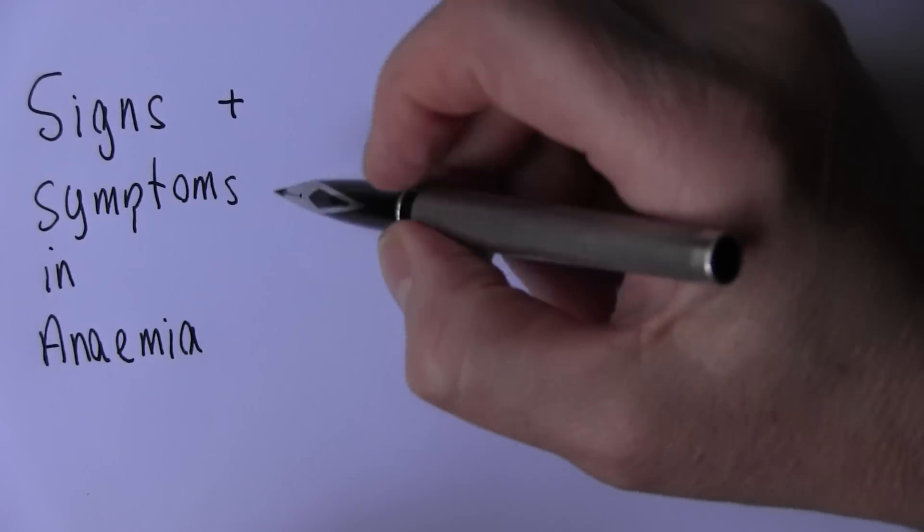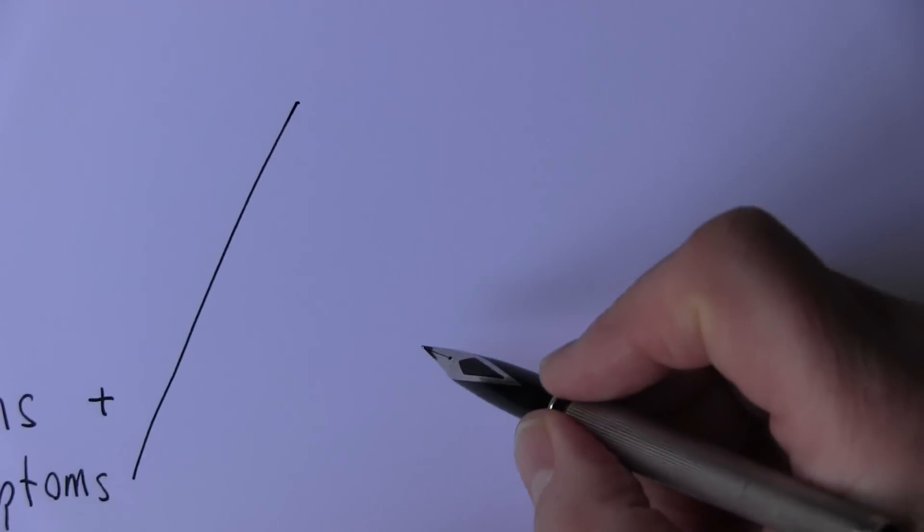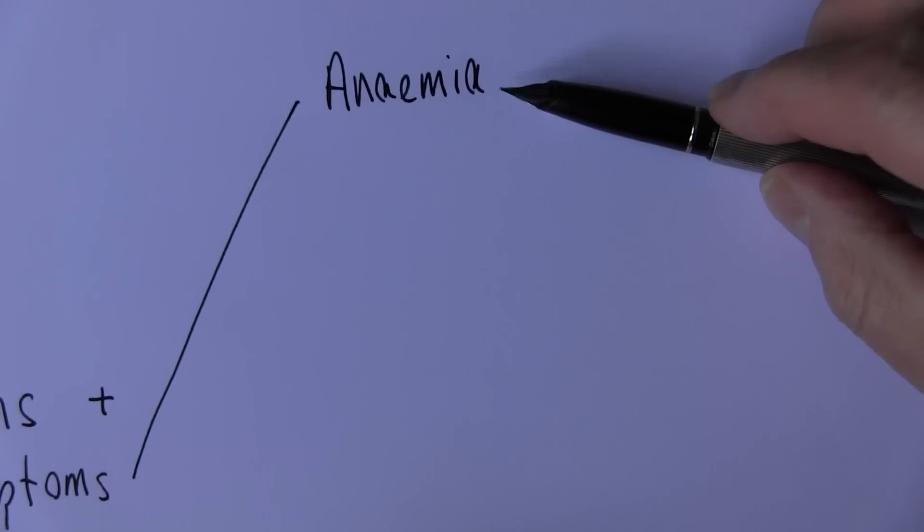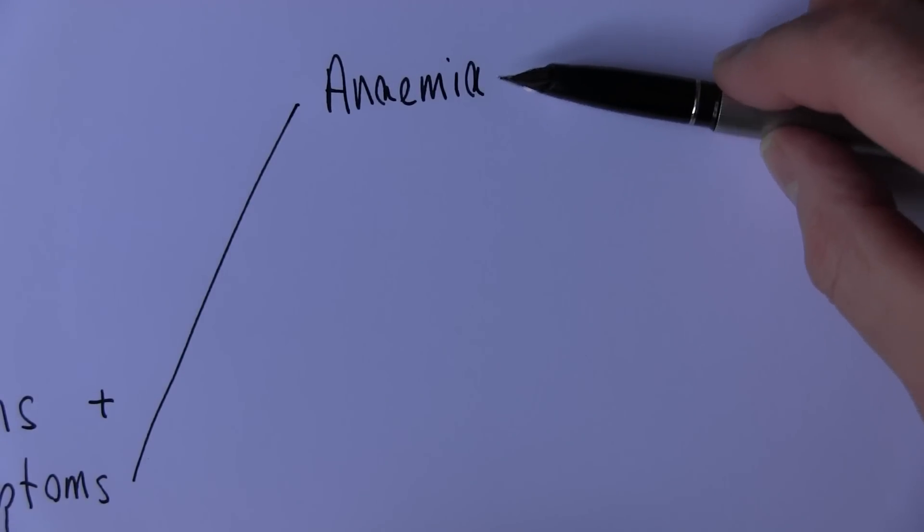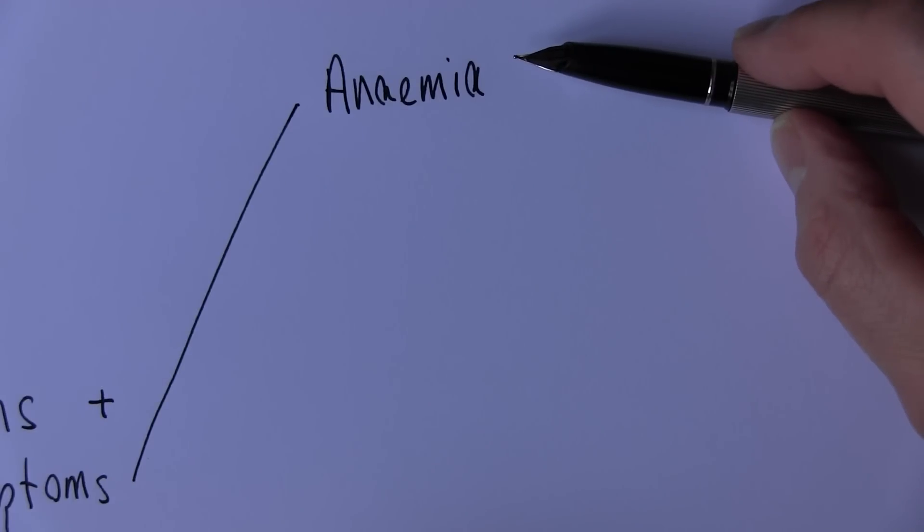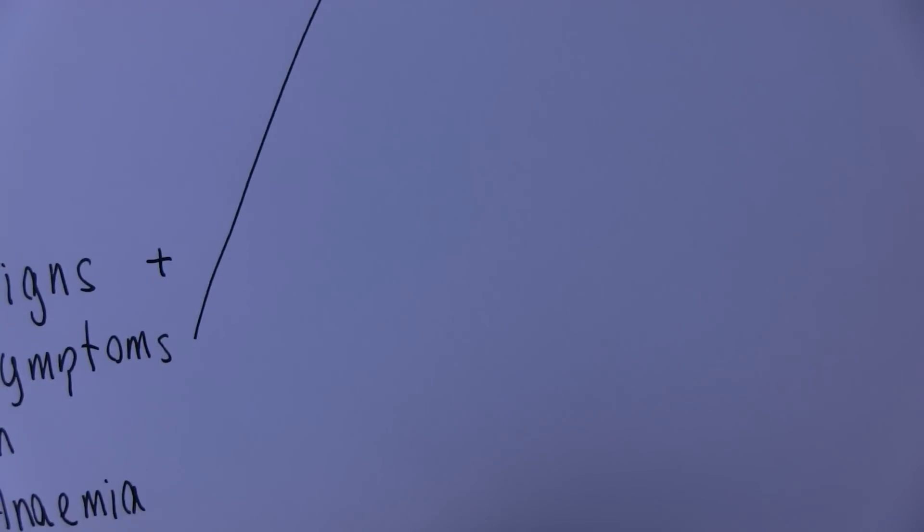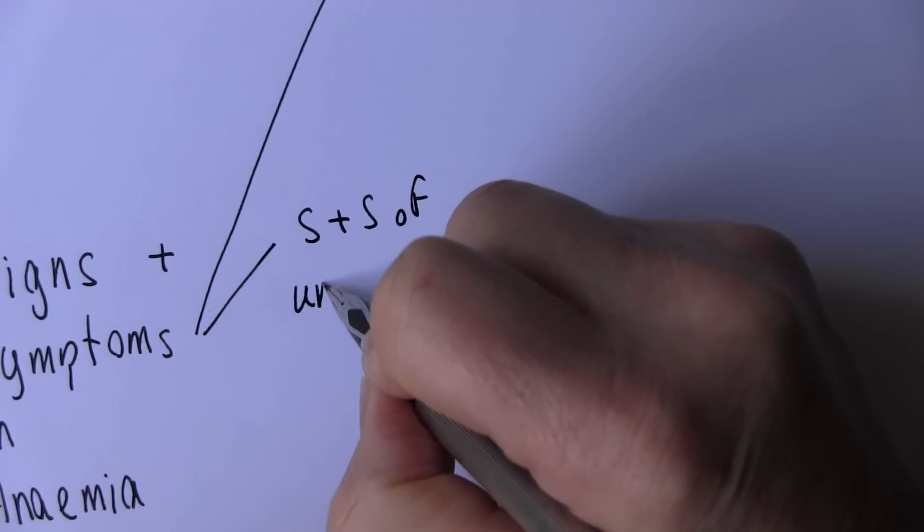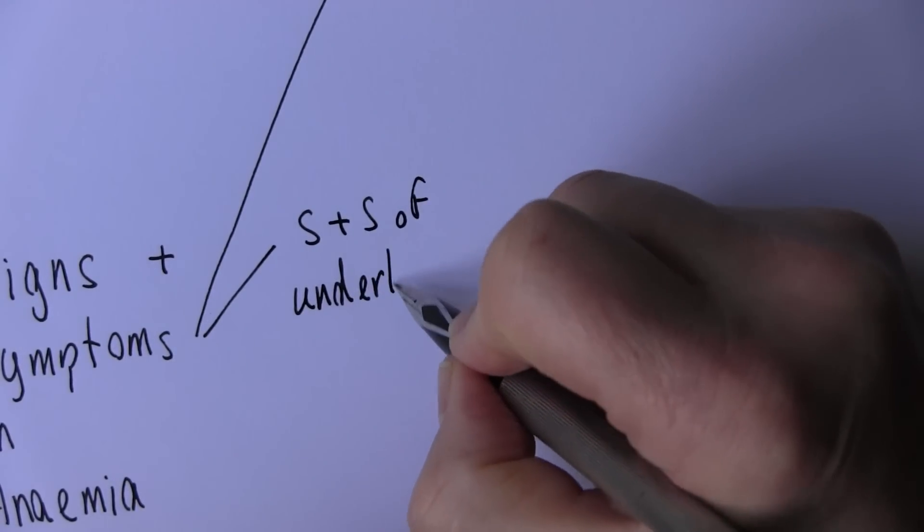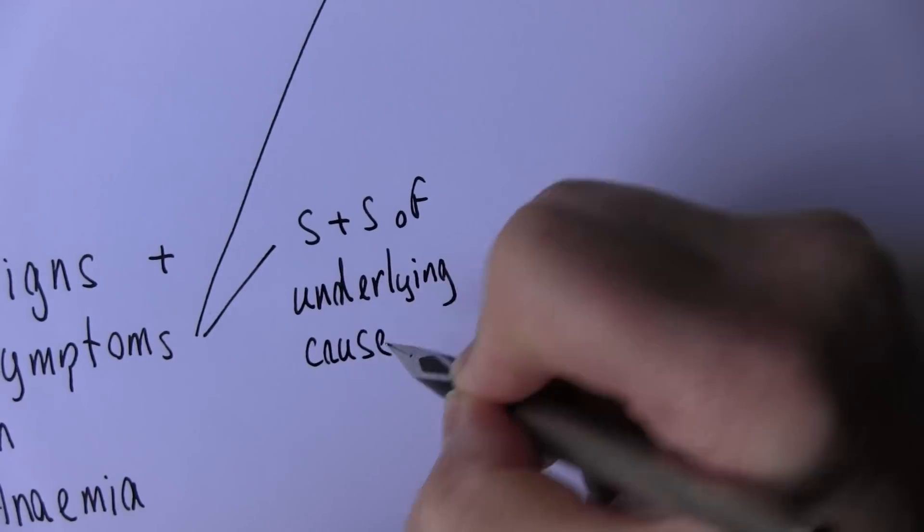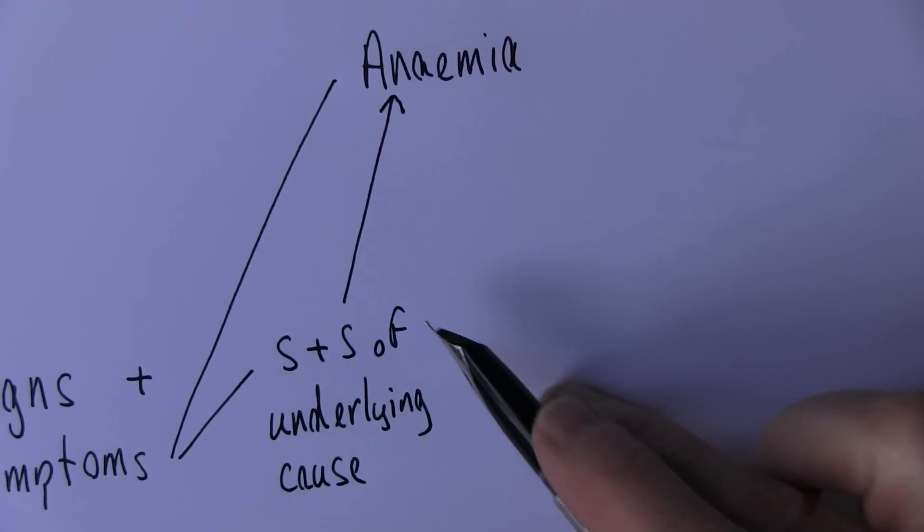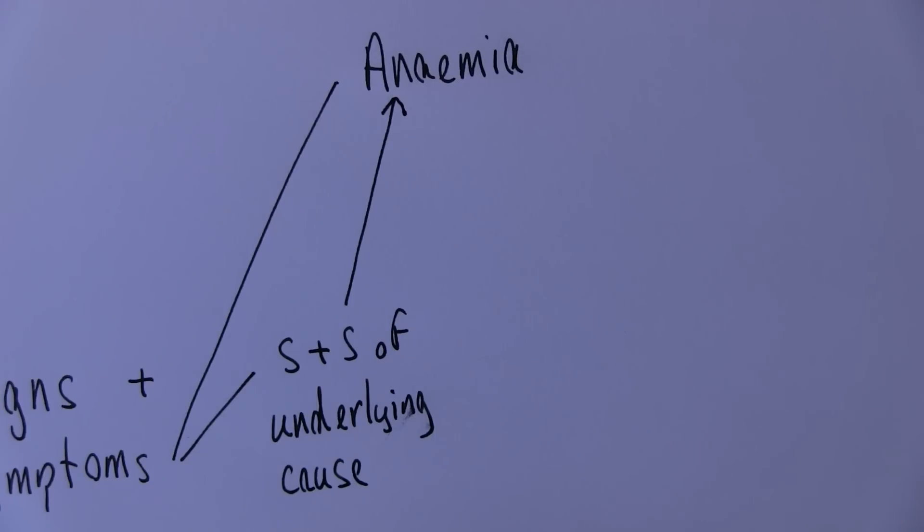Now clearly there's going to be signs and symptoms relating to the anemia, so the fact that there's a reduced oxygen carrying capacity of the blood is going to generate a spectrum of clinical features, as you would expect. But before we go on to that I wanted to think about the signs and symptoms of the underlying cause, because obviously there's going to be a cause of the anemia. And we want to be able to recognize the signs and symptoms of the underlying cause as well.